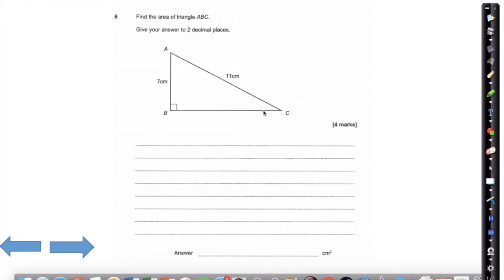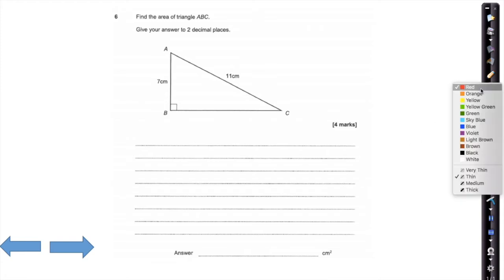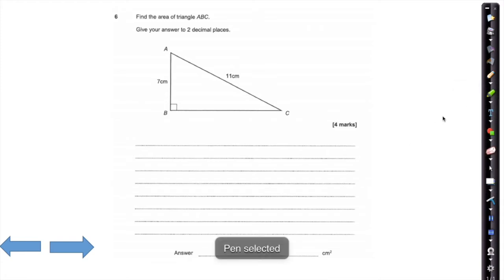Question 6 is looking at the area of triangle ABC — give your answer to two decimal places. For this one, they might try to catch you out with some rounding. Try to avoid rounding to only two decimal places during your working out — always try to go to a few more decimal places.